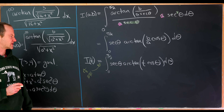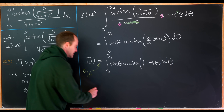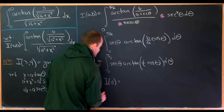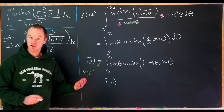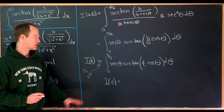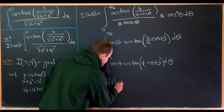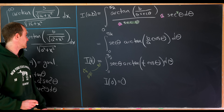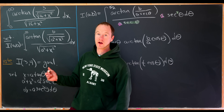Let's figure out a certain value of I. Notice that if we evaluate I at t equals zero, we get the inverse tangent of zero, which is zero, so we're just integrating the zero function. This gives us I(0) = 0.